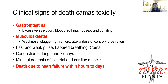In terms of clinical signs, the first are problems of the stomach or gastrointestinal tract. Animals might have excessive salivation and bloody frothing of the mouth. They can be nauseous and may also vomit. There can also be musculoskeletal problems including weakness, staggering, tremoring of the muscles, ataxia — a general loss of control of the body — and prostration. Affected animals might have a fast and weak pulse, difficulty breathing, and may go into a coma. There can also be congestion of lungs and kidneys, and necrosis of skeletal and cardiac muscle. This is ultimately an acute problem where death due to heart failure can occur within hours to days.